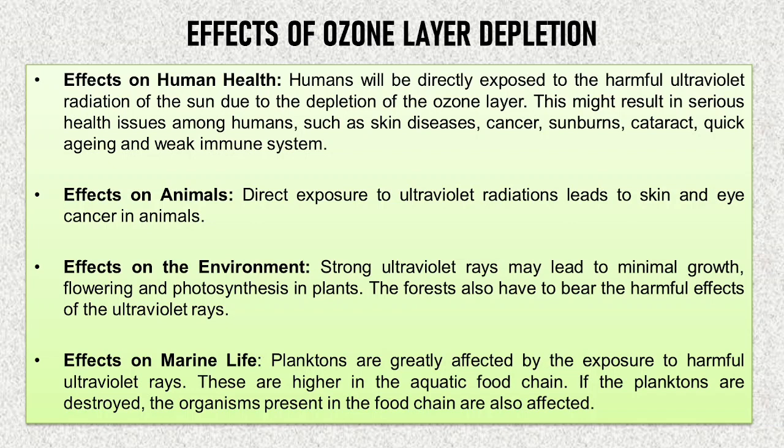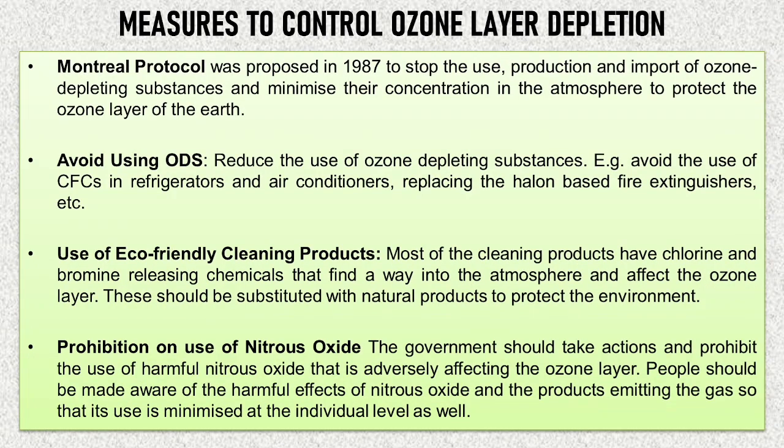Effects on marine life: planktons are greatly affected by exposure to harmful ultraviolet rays, and they are higher in the aquatic food chain. If the planktons are destroyed, the other organisms in the food chain are also affected. The major ozone layer control effort is the Montreal Protocol, which took place in 1987 to stop the use, production, and import of ozone depleting substances and minimize their concentration in the atmosphere to protect the ozone layer of the earth.